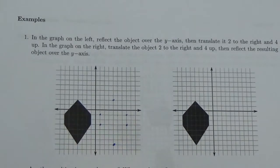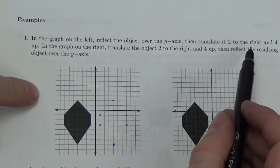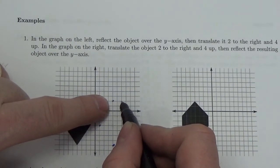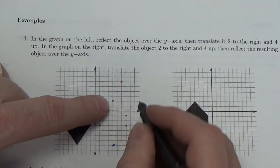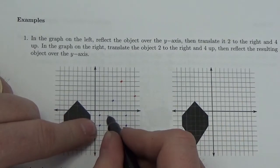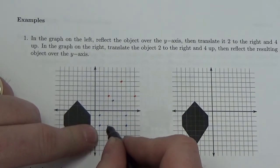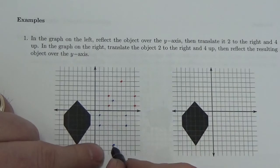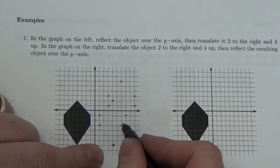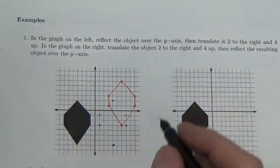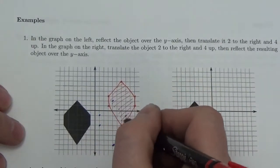Now I'm going to take each point and move it 2 to the right and 4 up. From here I go 2 to the right and up 4. I repeat that for each point — 2 to the right and 4 up for every vertex. Here is the final object that I've created. Maybe we shade that in just so it stands out a little bit better.